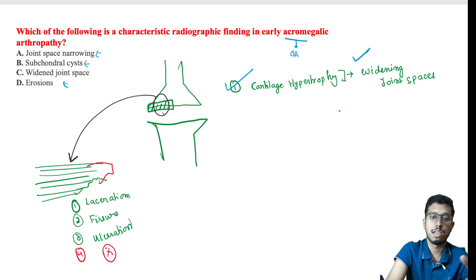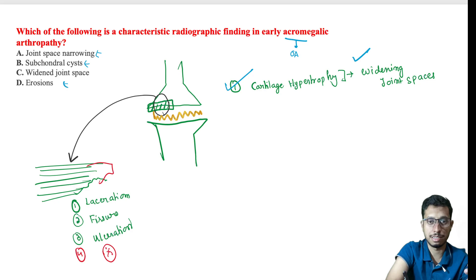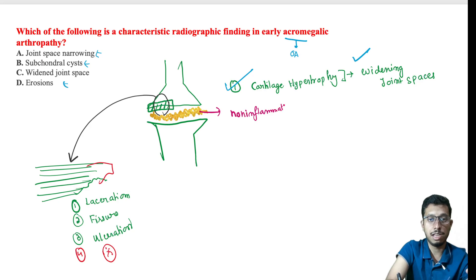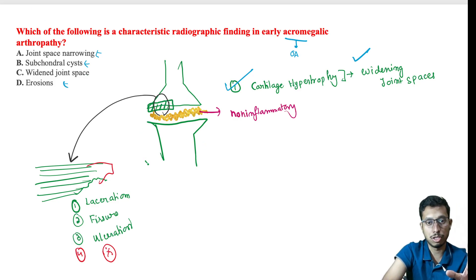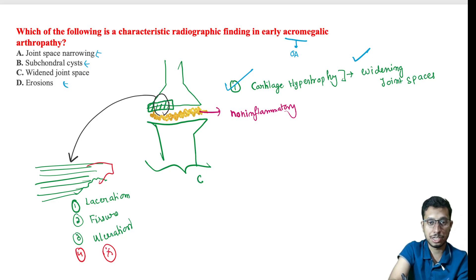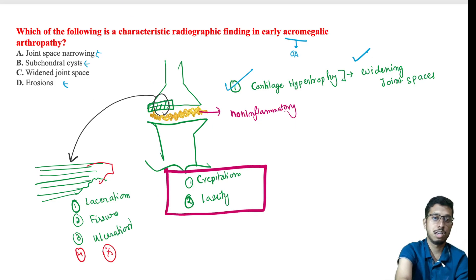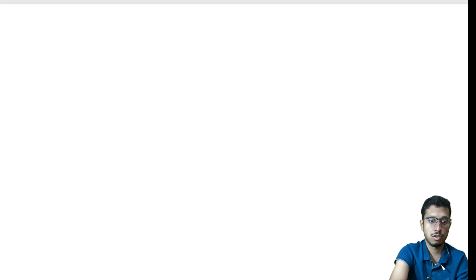To summarize: cartilage hypertrophy causes widening of joint space, followed by more hypertrophy causing laceration, fissure formation, ulceration, and joint space destruction. Importantly, the fluid accumulation seen here is non-inflammatory. Clinically, moving the joint produces crepitus and there is laxity of joints. Therefore, the answer to this MCQ — the characteristic radiographic finding in early acromegalic arthropathy — is widening of the joint space.